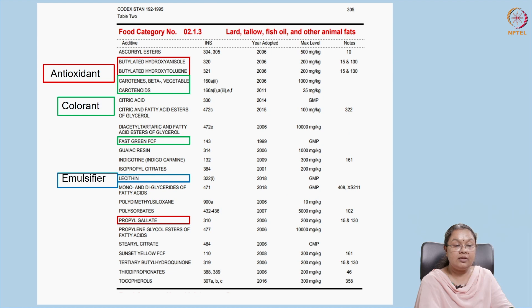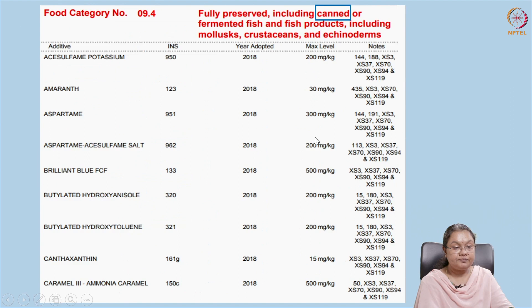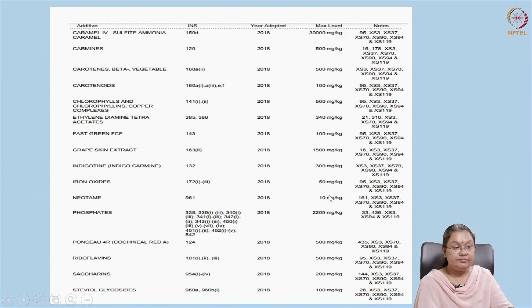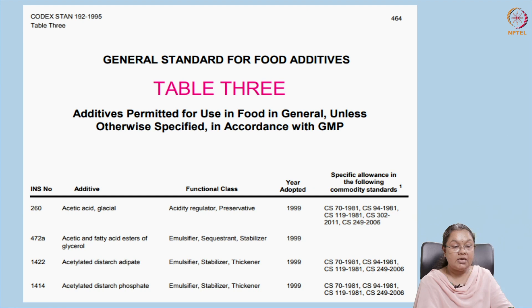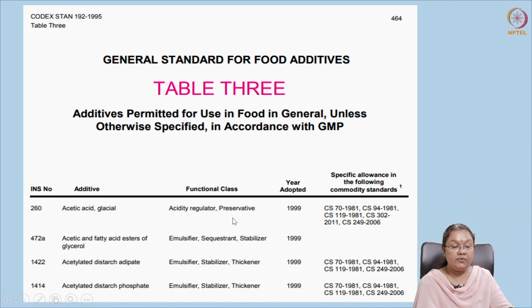Table 2 also covers category 9.4 for canned and fermented food products. For example, acesulfame K has the E number 950, and the year and maximum level are specified. Table 3 includes certain additives that have not been covered in Table 1 and Table 2, along with their functional properties. For example, acetic acid (glacial acetic acid) has an INS number of 260, and from Table 3 you can see it functions as a preservative and acidity regulator — wherever we need to regulate acidity or bring down pH, we can use acetic acid. The year of adoption and commodity-specific information are also provided.